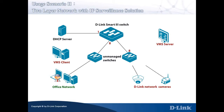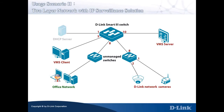Connect D-Link network cameras to the unmanaged switch to the right. Connect the VMS client and the VMS server to the Smart 3 switch. The DHCP server, which currently exists in the user's network environment, has always been connected to the Smart 3 switch and is properly configured by the customer network administrator.